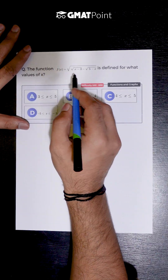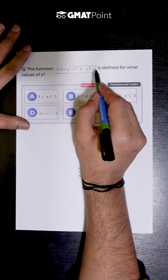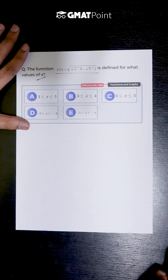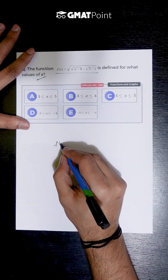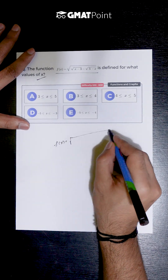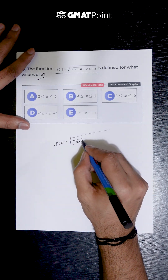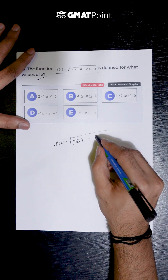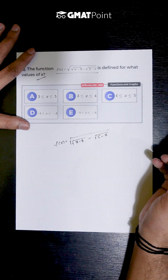Let us see how to solve this question. The function f of x is defined for what values of x. The function f of x given is square root of square root of x minus 3 minus square root of 5 minus x.